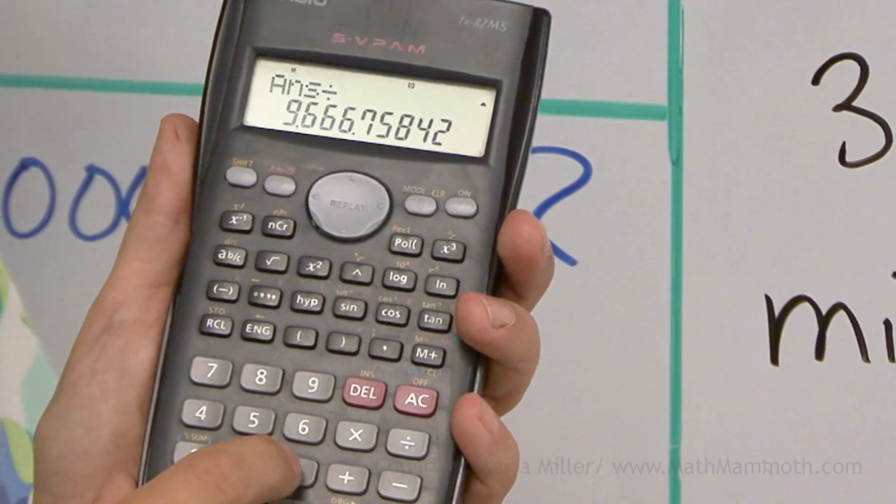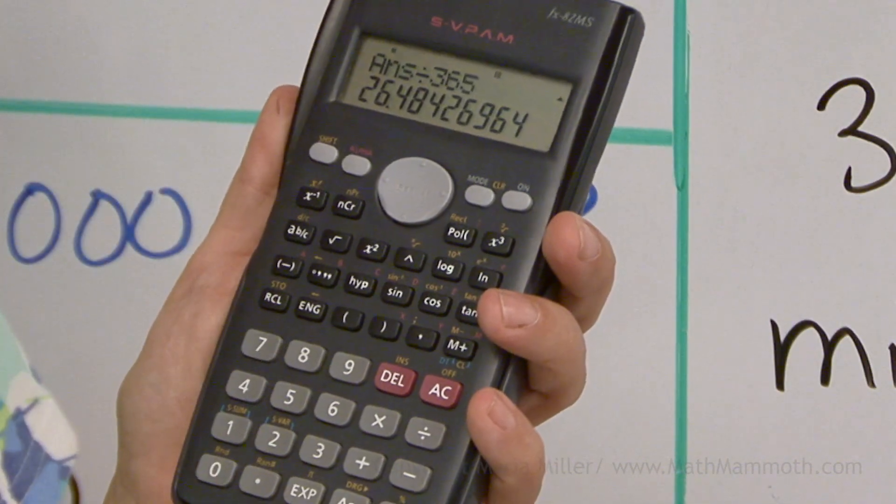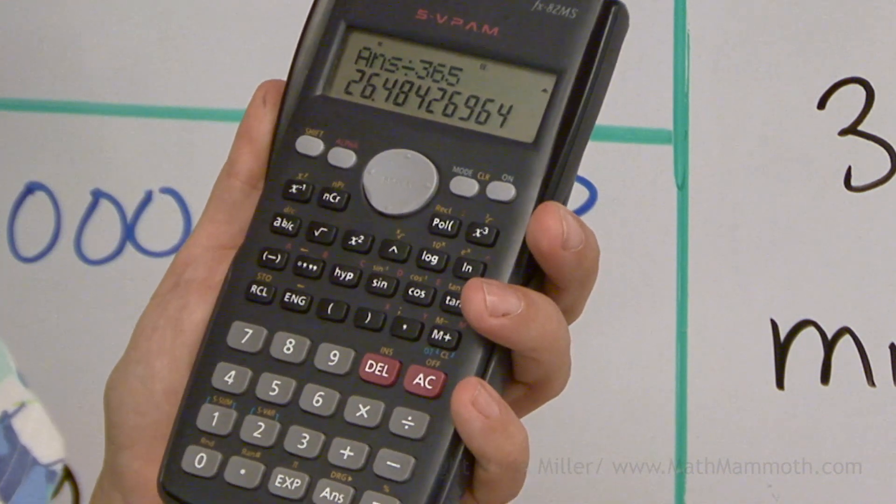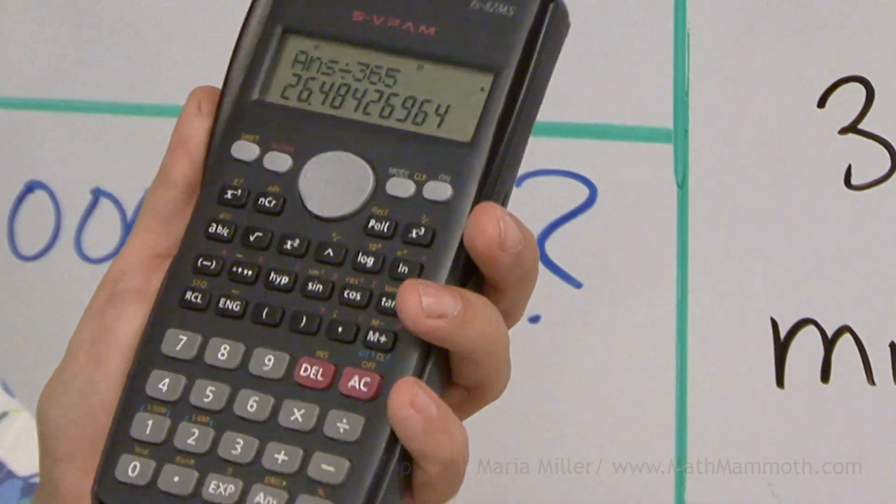This divided by 365 equals 26.48 and so on, which I will round again to the nearest whole mile and get 26.